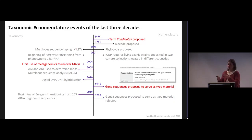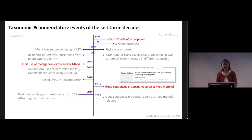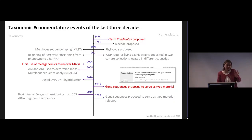The 16S rRNA gene allowed us to reconstruct phylogenies of cultured and uncultured microorganisms, and there was a realization that we don't know much about microbial diversity because much of it is actually uncultured. What we knew in the past was mostly based on cultured isolates stored in culture collections. In 1994, the term 'Candidatus' was proposed by the international community of systematics of prokaryotes, placed outside the International Code of Nomenclature — a provisional status for taxa whose existence was uncertain.